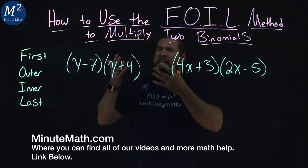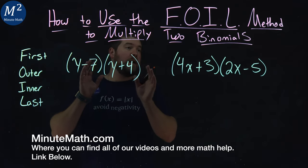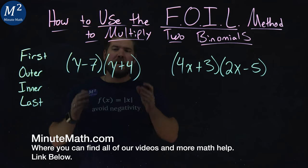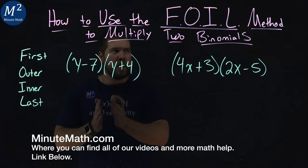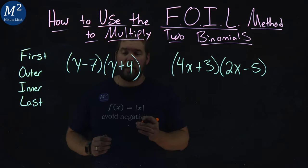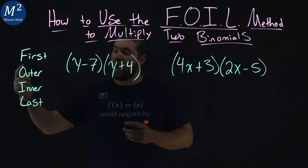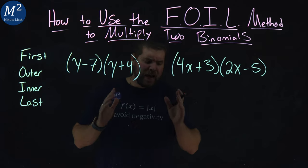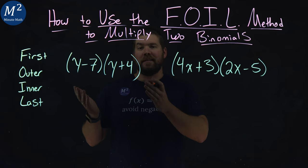We're given these two problems here. They're both binomials, or two sets of binomials, and we're multiplying them together. We're going to use the FOIL method to do that. That stands for First, Outer, Inner, Last, and this is a method to multiply these binomials.